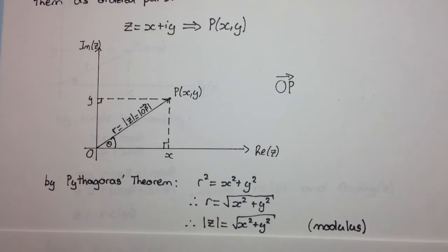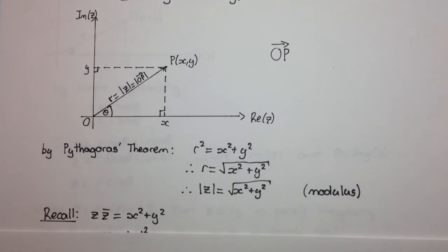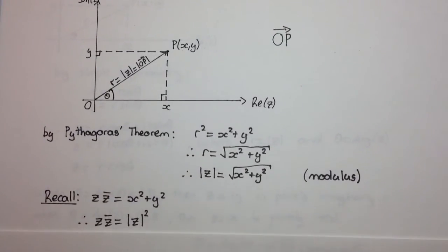Right, and that's equal to x squared plus y squared. Now, an important property to note here, if you remember back to a few videos ago, we looked at z times z bar, and that was equal to x squared plus y squared. So therefore, we can say that z times z bar is equal to the modulus of z squared. And that always holds.